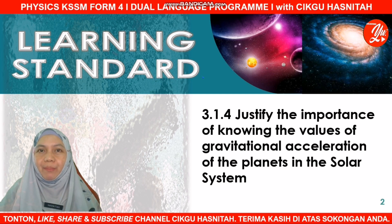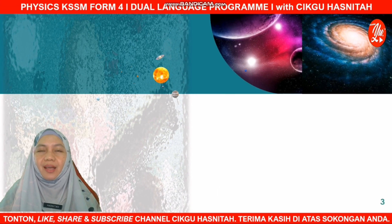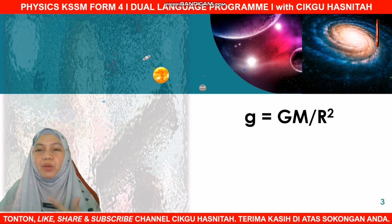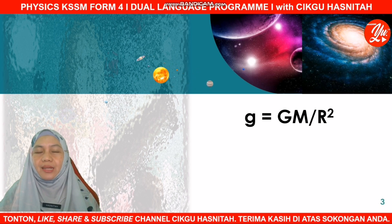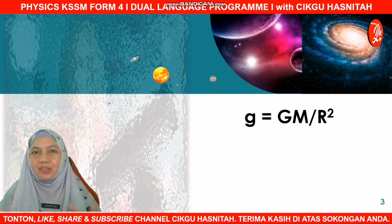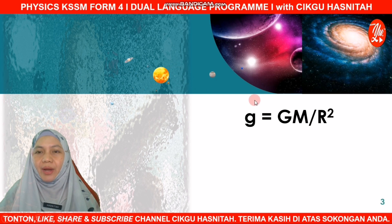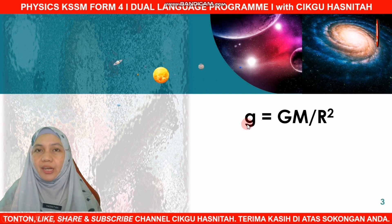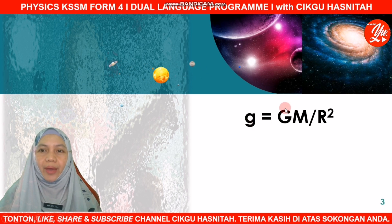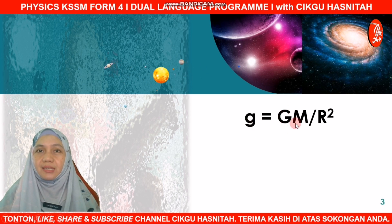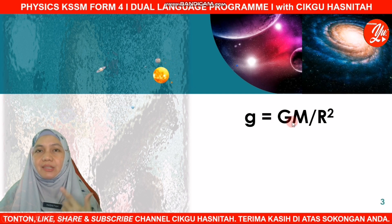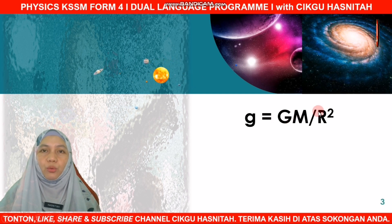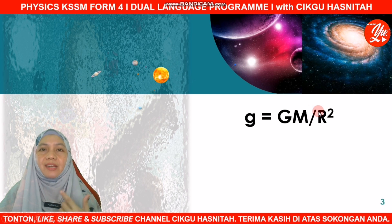So, if you remember in our previous lesson we have learned how to determine gravitational acceleration from the formula g = GM/r², where this lowercase g represents gravitational acceleration, capital G is the gravitational constant, M is the mass of Earth, and r² refers to the radius of the Earth.